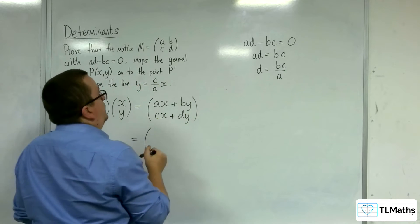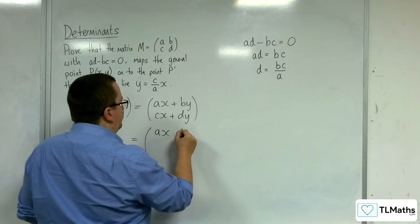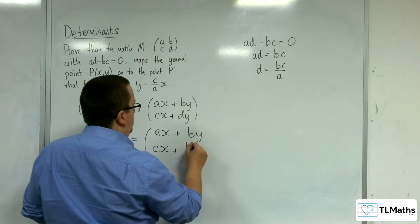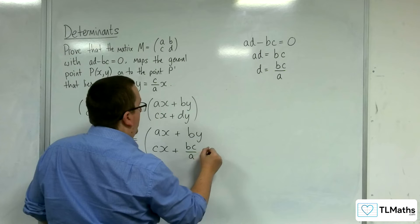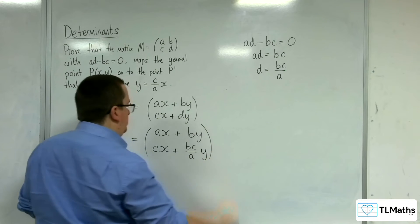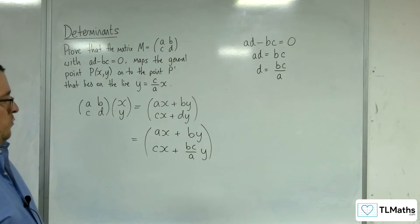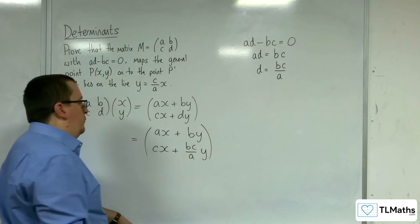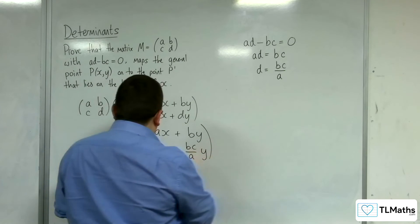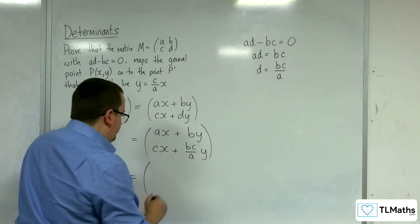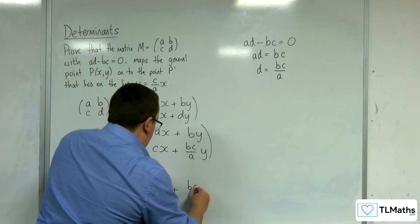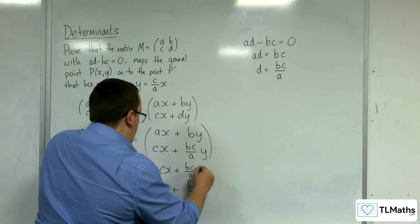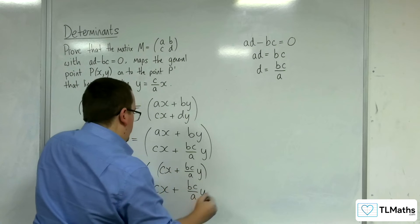Well, replacing the d anyway. So, I've got the ax, that can stay the same. The by can stay the same. The cx can stay the same. The d can be replaced with bc over a. So, cx plus bc over a y. Cx plus bc over a y.